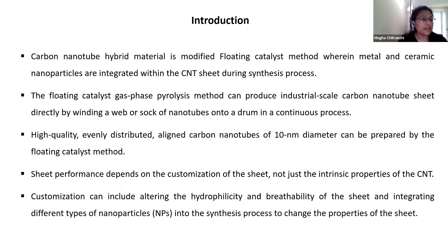The floating catalyst CVD pyrolysis method is used for the synthesis of this hybrid material. This method can produce industrial-scale CNT sheet directly by winding a sock of nanotubes onto a drum. It is a one-step continuous process which can produce evenly distributed, high-quality carbon nanotubes of nearly 10 nanometer diameter. CNT sheet properties and performance depend on the customization of the CNT sheet, not just the intrinsic properties of the carbon nanotube. Customization can include modifying the breathability and other properties by integrating different types of nanoparticles into the synthesis process.